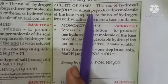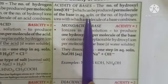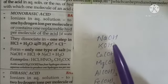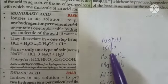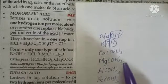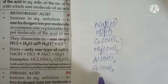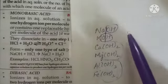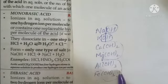Next is the acidity of bases. The acidity of a base is the number of hydroxyl ions which can be produced per molecule of the base in aqueous solution. For example, sodium hydroxide and potassium hydroxide produce one hydroxyl ion per molecule. Calcium hydroxide and magnesium hydroxide produce two hydroxyl ions, while aluminium hydroxide and iron(III) hydroxide produce three hydroxyl ions per molecule. On this basis, bases are divided into three categories: monoacidic, diacidic, and triacidic.